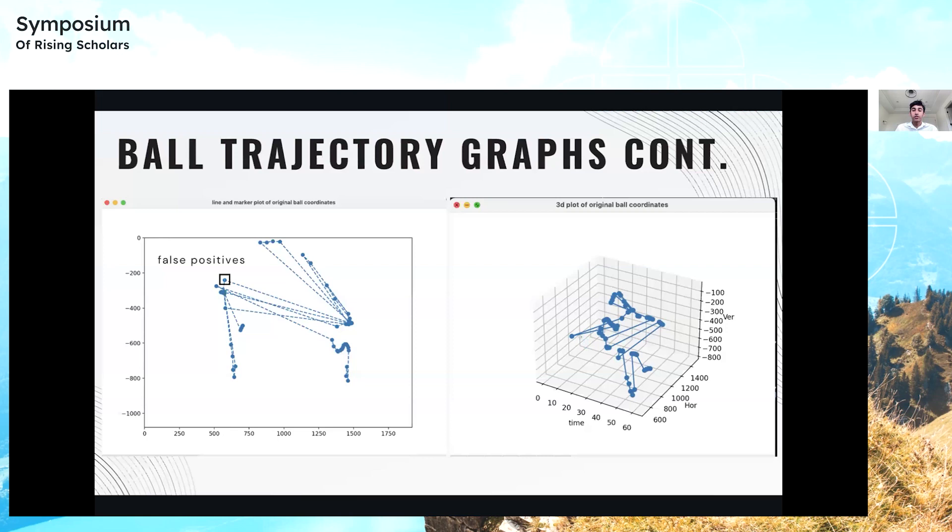Here are two more ball trajectory graphs. These helped identify and remove the false positives. These included the aspects of time. On the bottom left, I have a line and marker plot using the original ball coordinates. This shows the relationship between the ball coordinates and time. The lines show that between each frame, sometimes it takes a different object as the ball, which helps me eliminate false positives.